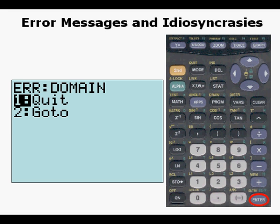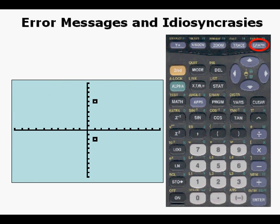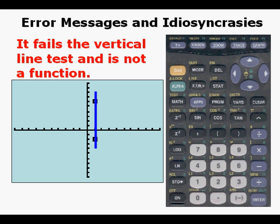And we get this error domain. Well, let's figure out what's happened. We go to y equals, plot 1 is turned on, and so we graph it and we see one point is above the other. Well, this fails the vertical line test and is therefore not a function.